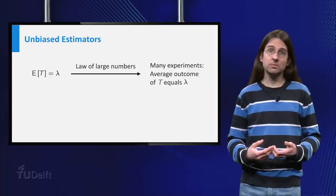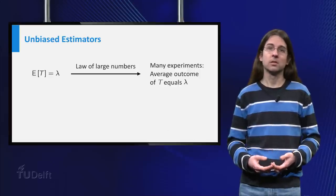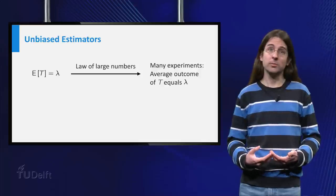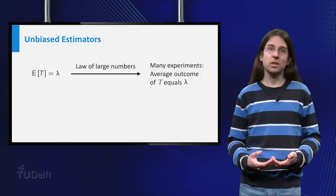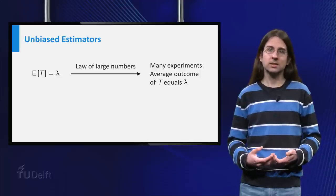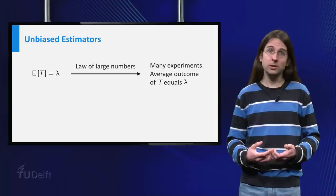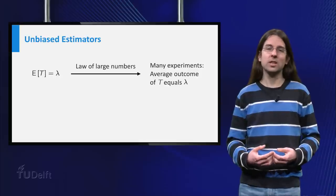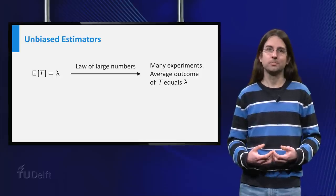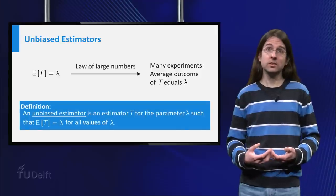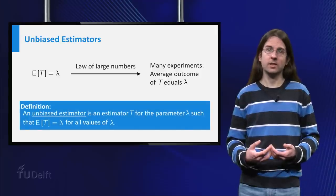We want this to be valid for the true value of lambda, but since we do not know which value lambda has, we just insist on this for all values of lambda. This way, we are certain that for our value of lambda, the expectation of the estimator equals lambda as well. An estimator satisfying this condition is called an unbiased estimator.